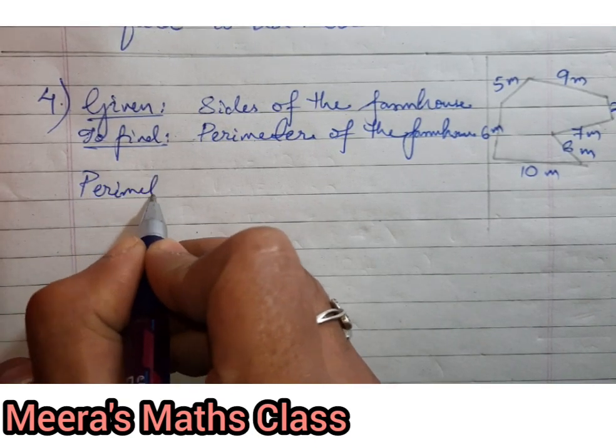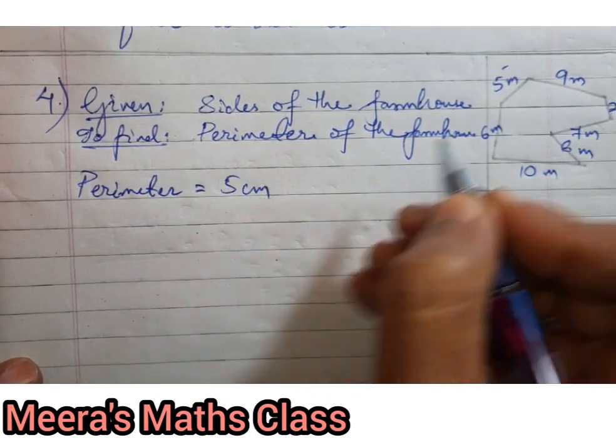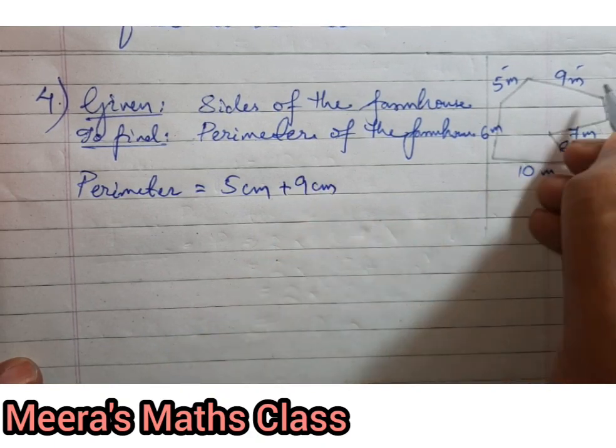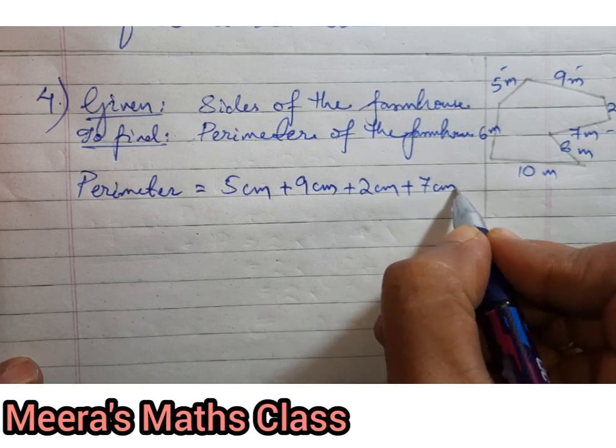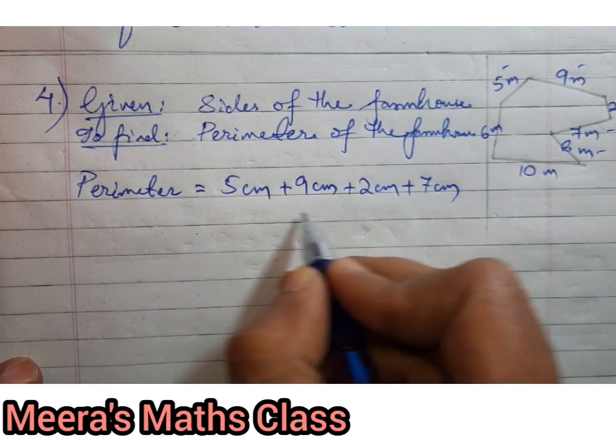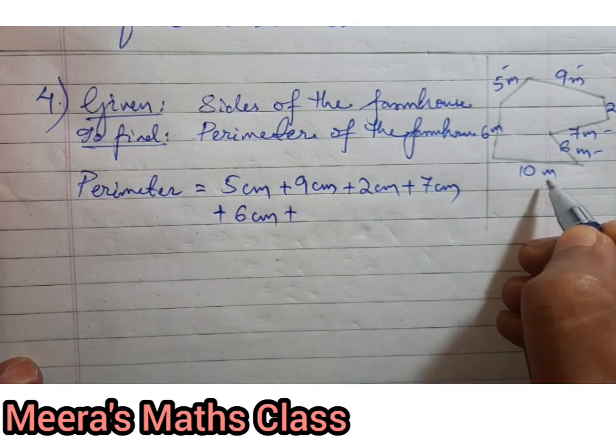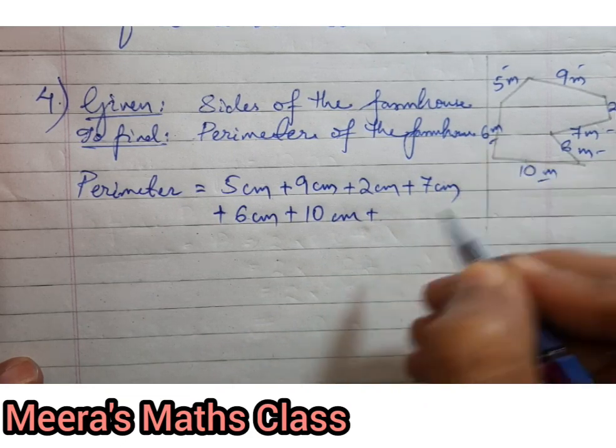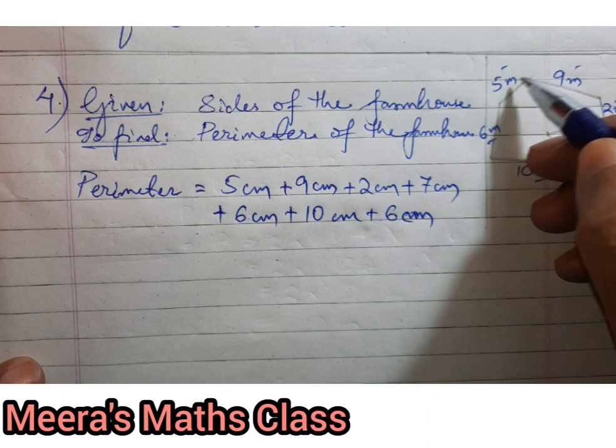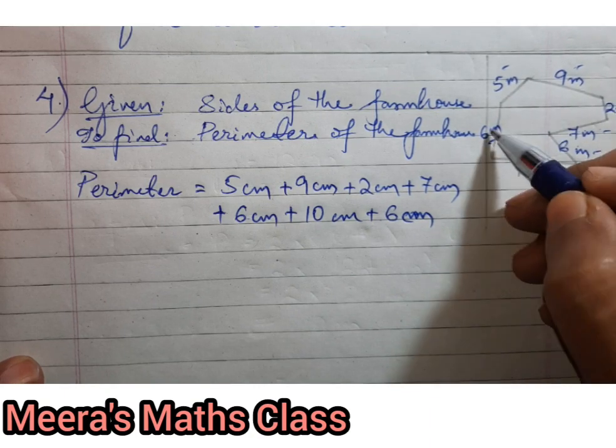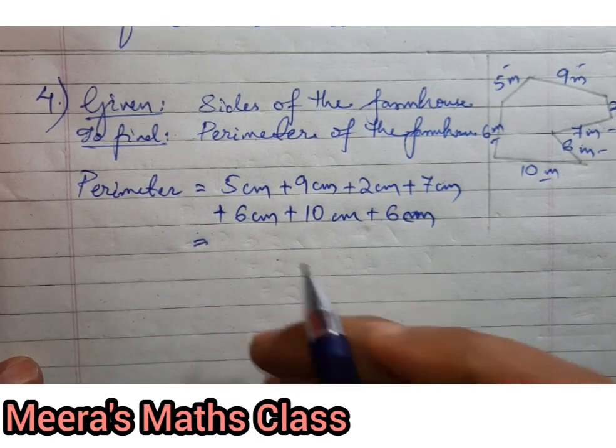So let's go to the perimeter part. Perimeter is equal to... We'll start from here: 5 meter, then plus 9 meter, plus 2 meter, plus 7 meter, plus, you can write, go down and write, 6 meter, then 10 meter, then 6 meter. Okay, so I hope I have written all. Let me count it: 1, 2, 3, 4, 5, 6, 7. Yes.